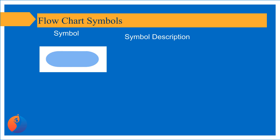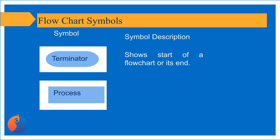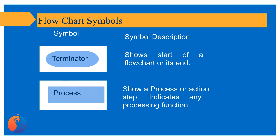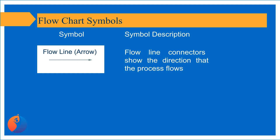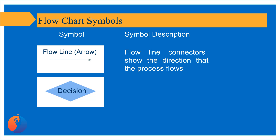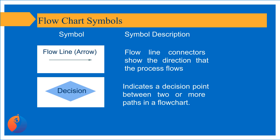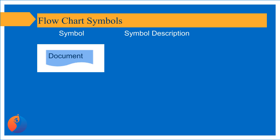Flowchart symbols, names, and description: Terminator — shows the start or end of a flowchart. Process — shows a process or action step, indicates any processing function. Flowline, arrow, or connector — flowline connectors show the direction that the process flows. Decision — shows a branching point or action step, indicates any processing function.